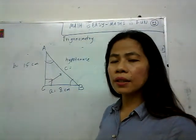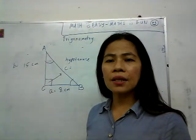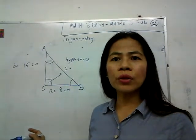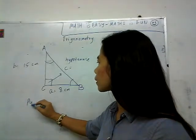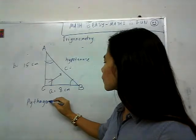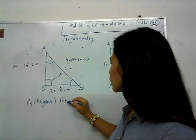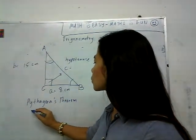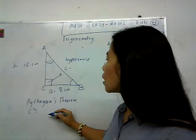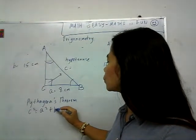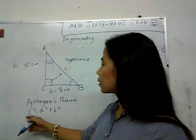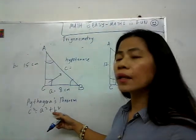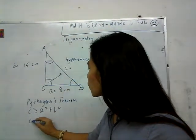Our task is to find side C, the hypotenuse of the triangle. For this exercise we're going to use the Pythagorean theorem, which states that the square of the hypotenuse is equal to the sum of the squares of the other two sides. So if you want to find the longest side, you add together the squares of A and B: C squared equals A squared plus B squared.